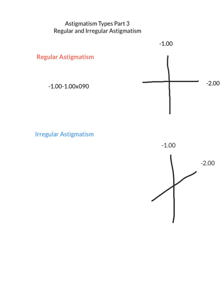This video is on astigmatism types. This is the third video on astigmatism types, and I'm going to talk about regular and irregular astigmatism.